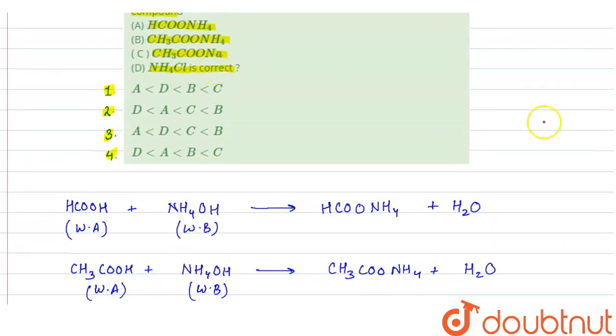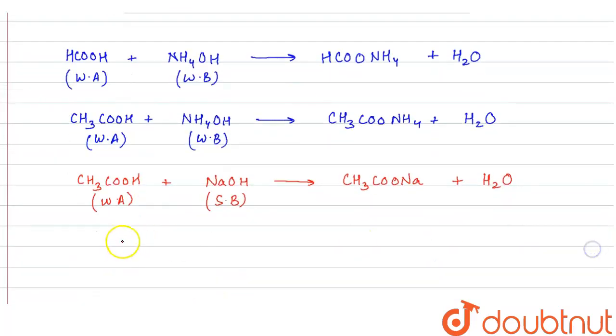In last, we are given ammonium chloride. Ammonium chloride is a salt of HCl and ammonium hydroxide. Here we get NH4Cl, salt ammonium chloride, and water. Here HCl is a strong acid and NH4OH is a weak base.